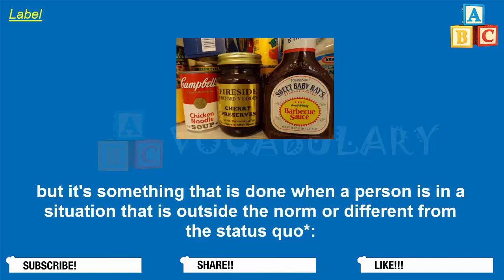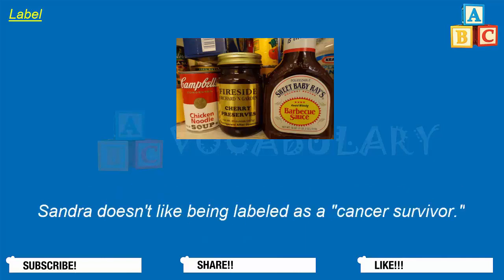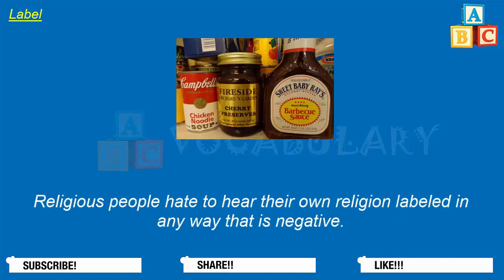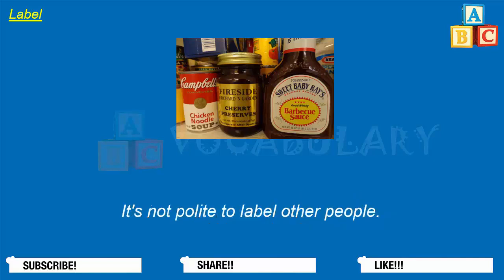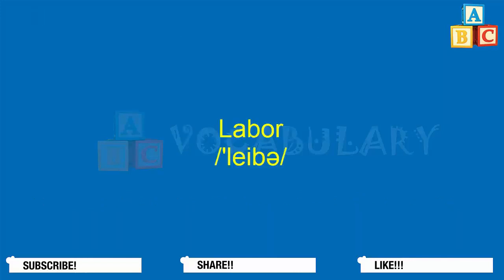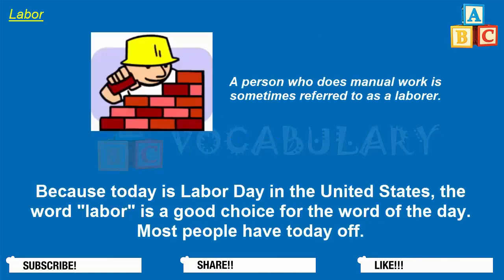Most people reject the idea of having a label placed on them, but it's something that is done when a person is in a situation that is outside the norm or different from the status quo. Sandra doesn't like being labeled as a cancer survivor. Religious people hate to hear their own religion labeled in any way that is negative. Henry rejected the label that was given to him by the other kids at school. It's not polite to label other people.